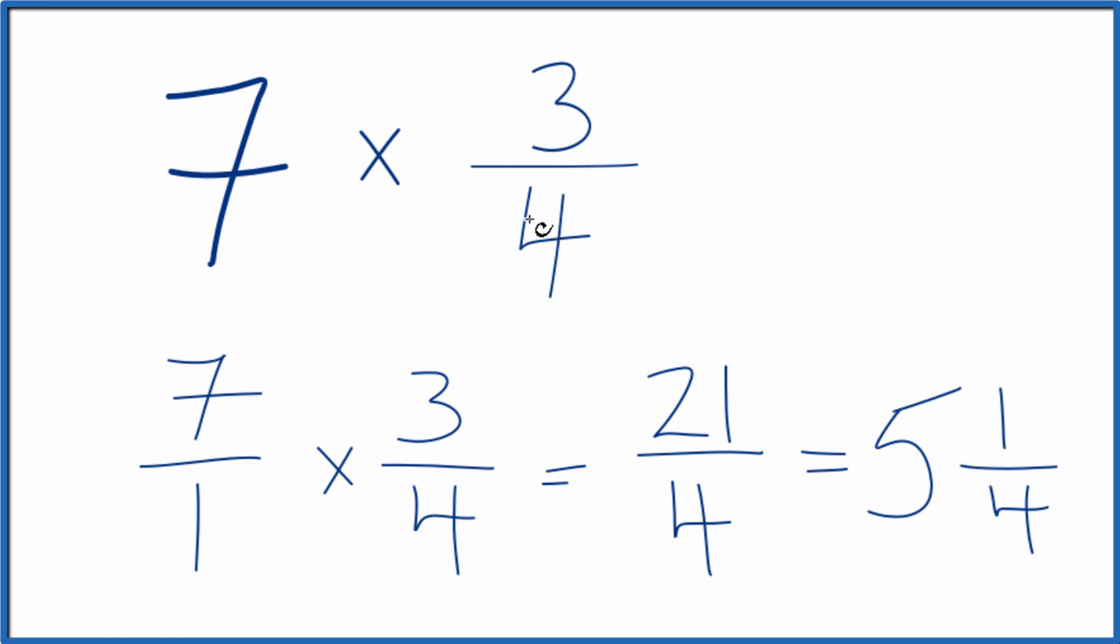7 times 3 fourths gives you the fraction 21 fourths, or you could call it the mixed number 5 and 1 fourth. This is Dr. B. Thanks for watching.